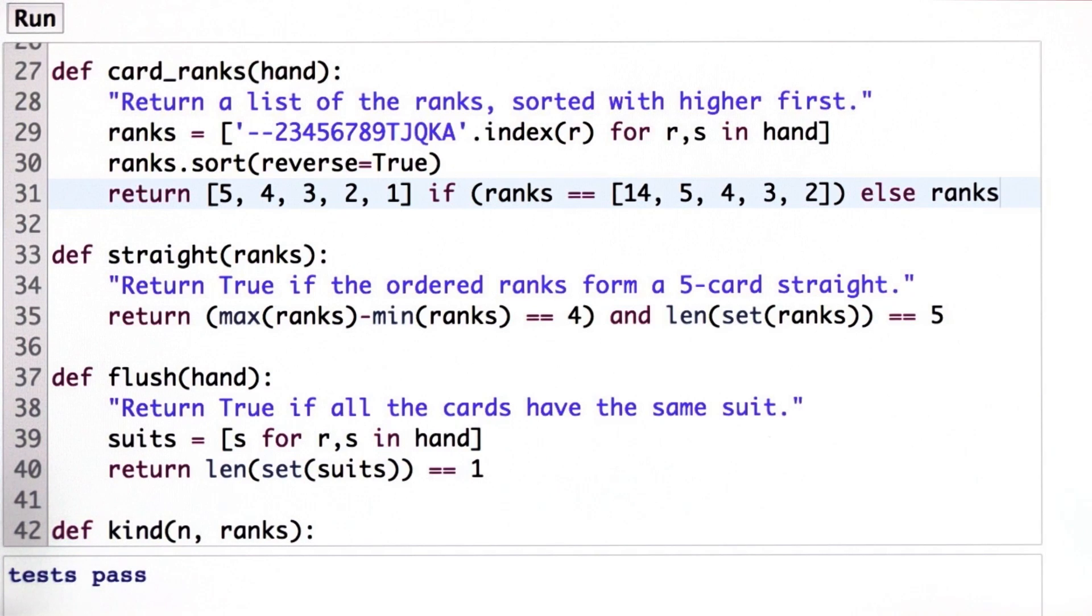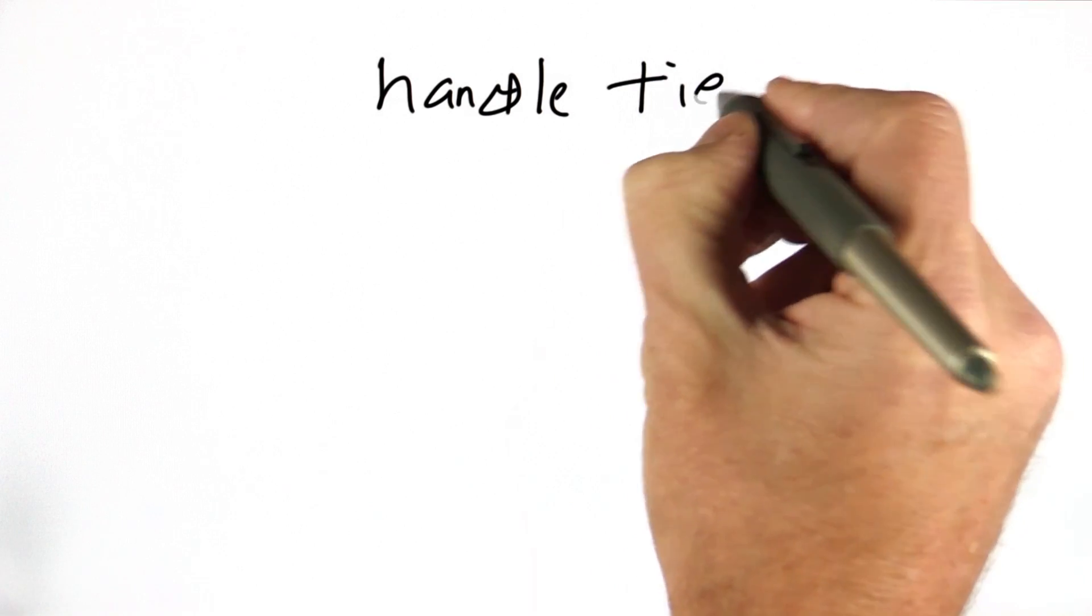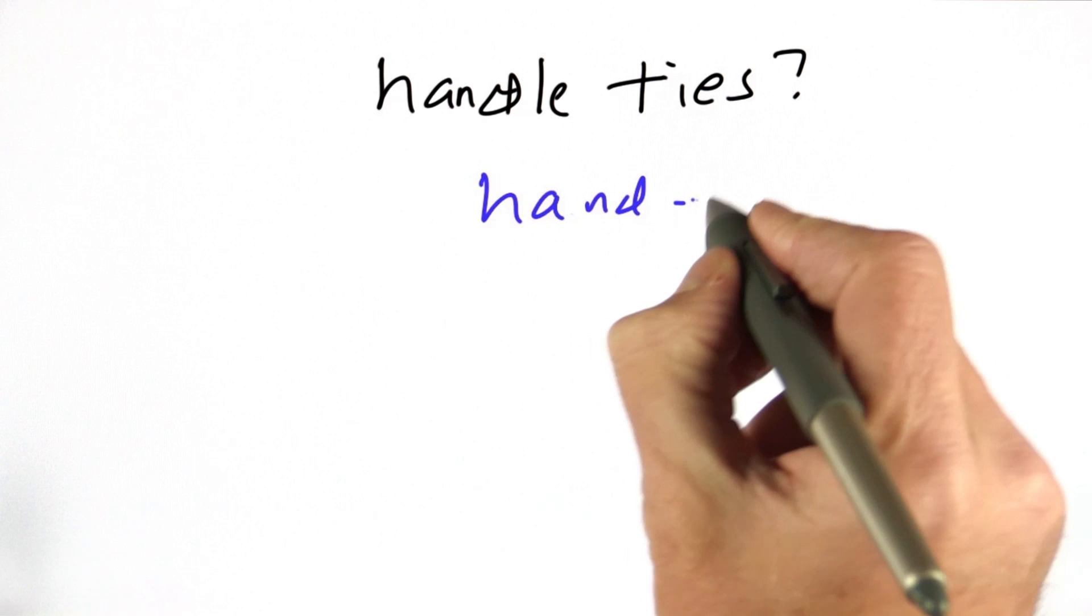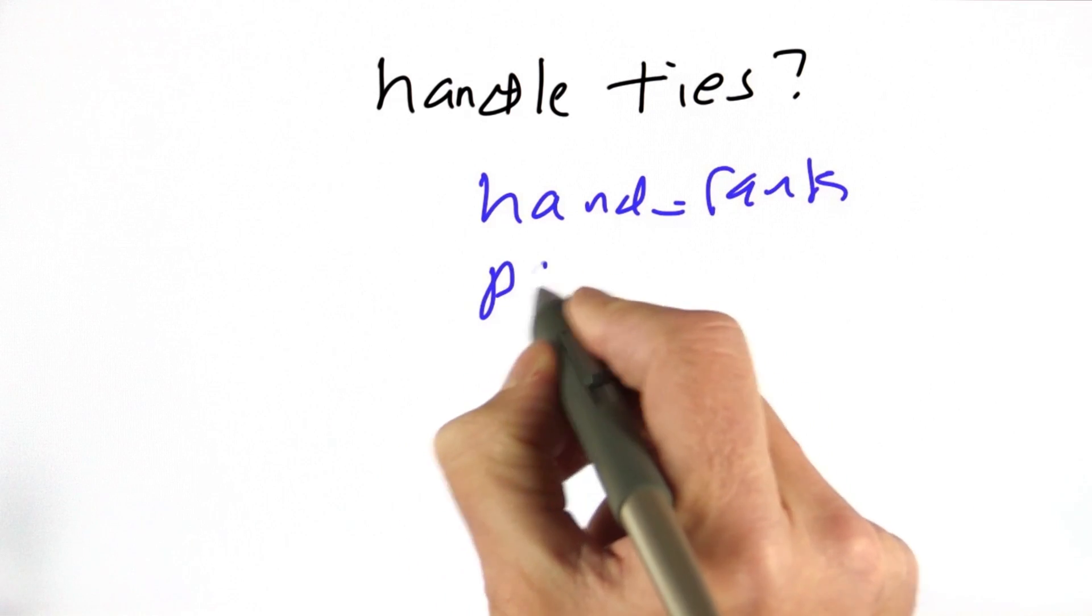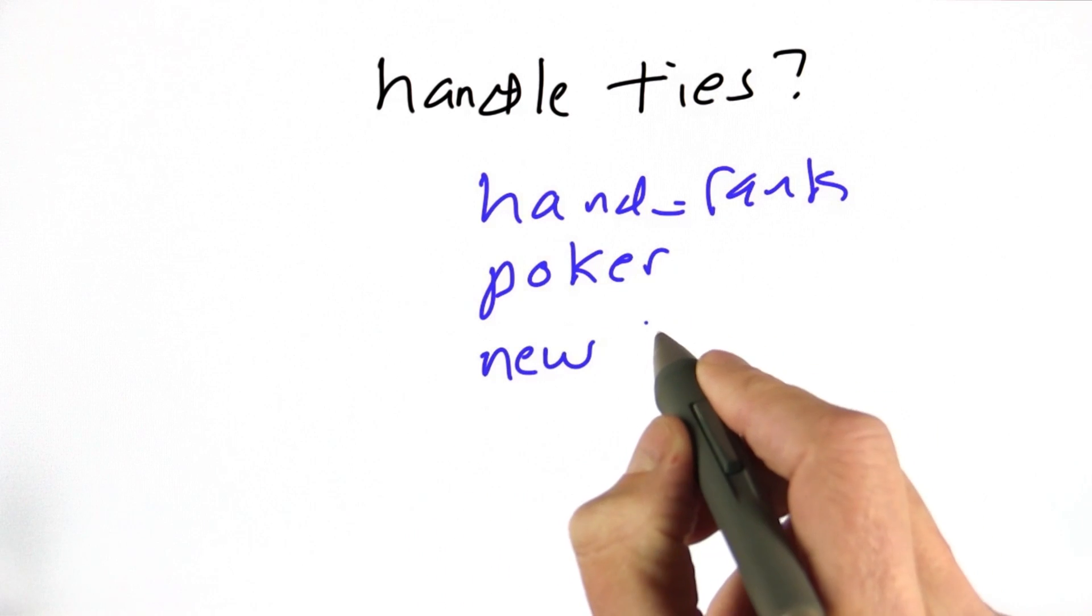So to accommodate that idea, what do you think we can do? So how are we going to handle ties? We could change the function hand_rank, we could change the function poker, or we could add a new function.